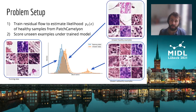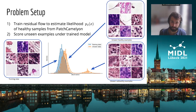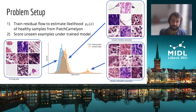So, how do we go about this? In our paper, we propose to use recent advances in normalizing flows to train a residual flow to estimate the density of healthy samples from the PatchCamelyon dataset. This dataset consists of small patches extracted from whole slide histopathology images, and here we use the same split of the original dataset and rely on the official code release of the residual flow paper.